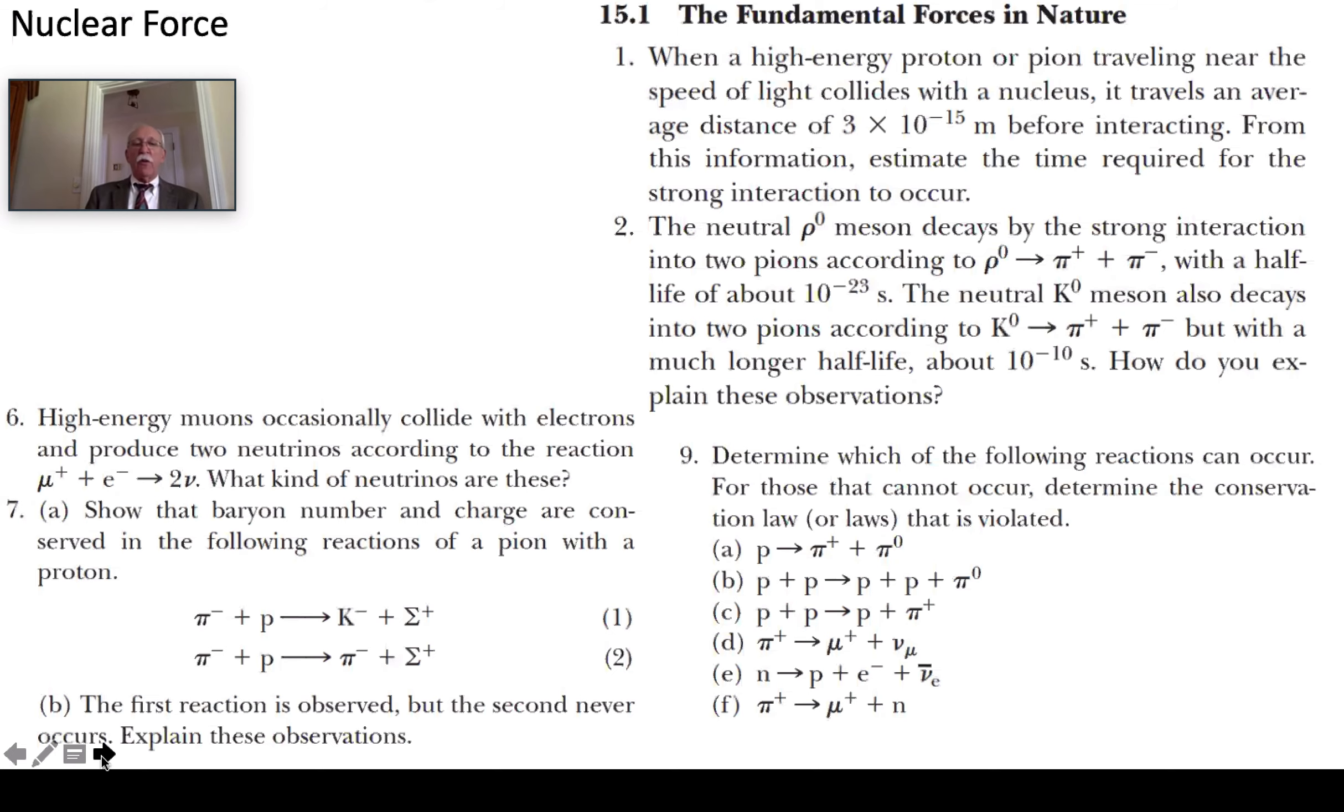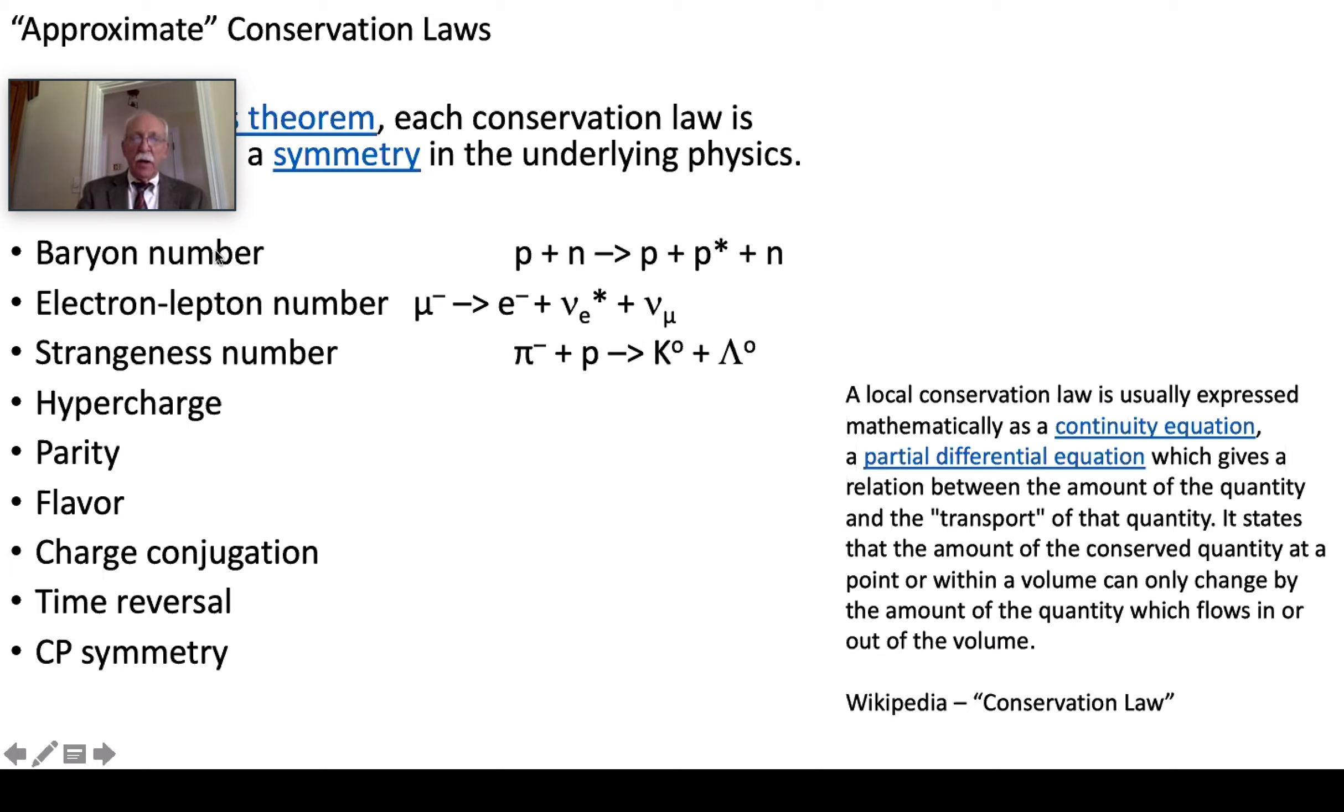So why don't we try some of these conservation laws? Baryon number means the sum of the baryon numbers before is equal to the sum of the baryon numbers afterwards. Is this a reaction that can take place? Can a proton plus a neutron turn all of their mass energy into a proton, an antiproton, and a neutron? No? Why not?